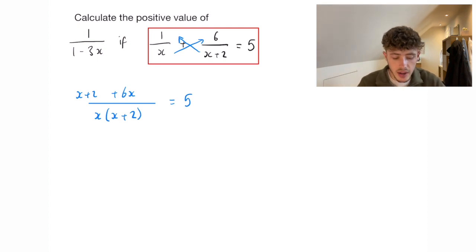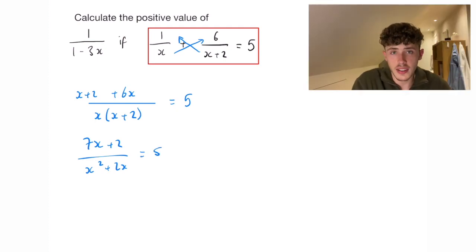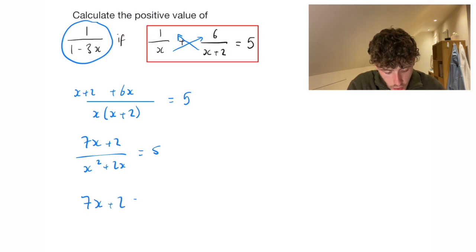So from here we can expand out and collect all our terms. So that's going to be 7x plus 2 over x squared plus 2x is equal to 5. So we multiply the x squared plus 2x up onto the other side, leaving us with 7x plus 2 equals 5 bracket x squared plus 2x.